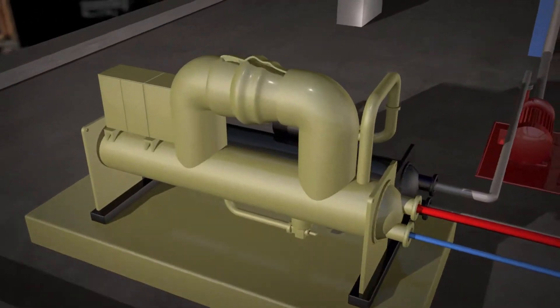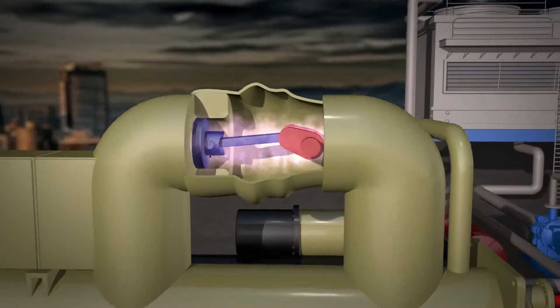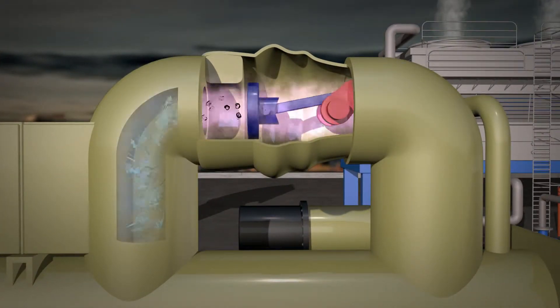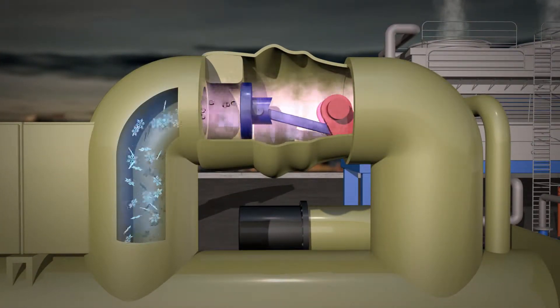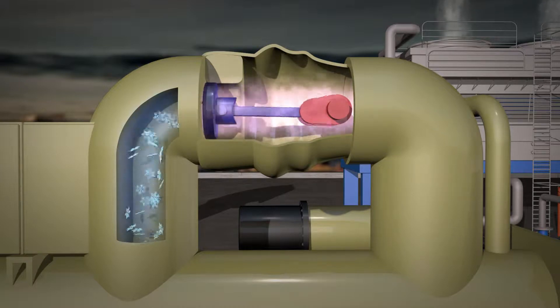The chiller has a compressor that initially squeezes gas, turning it into a liquid, that then passes through an expansion valve, returning it back to gas and making it cold.